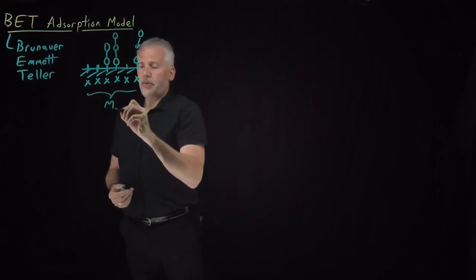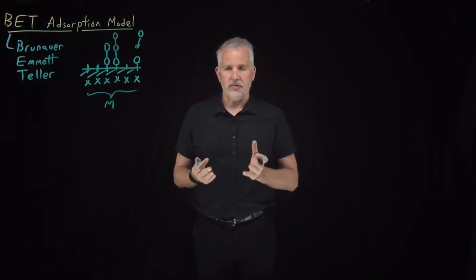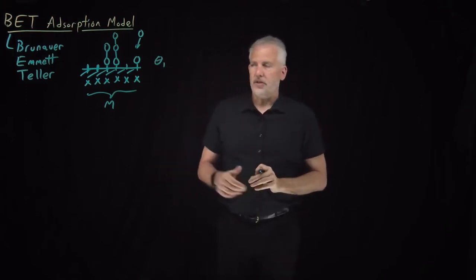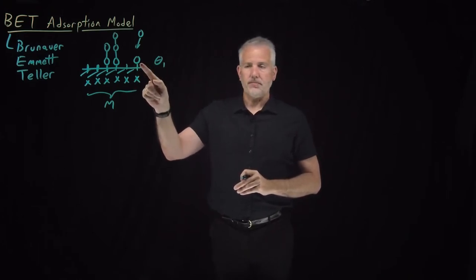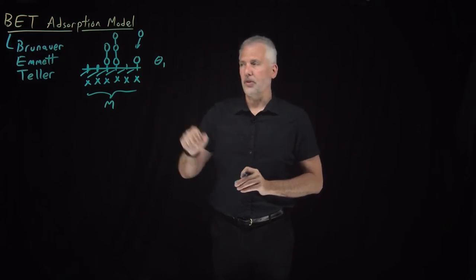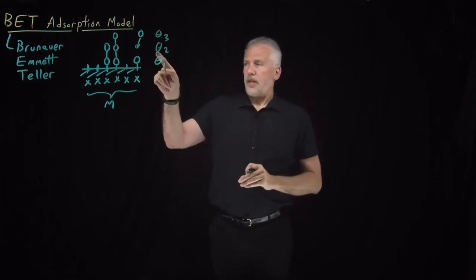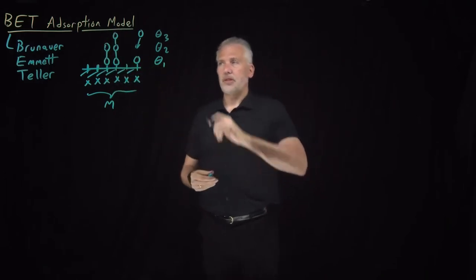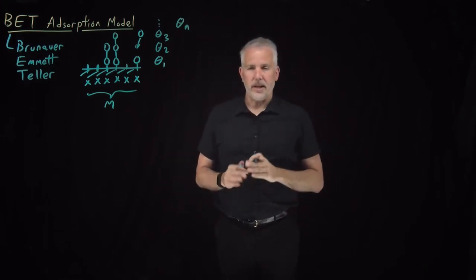We'll say we've got M total sites on this surface. Instead of just talking about surface coverage, we'll distinguish between theta sub 1 — the fraction of the surface covered by only one molecule — theta 2 and theta 3 for the fraction covered by two or three molecules, and so on. In general, theta_n describes the fraction of the surface covered by exactly n molecules.